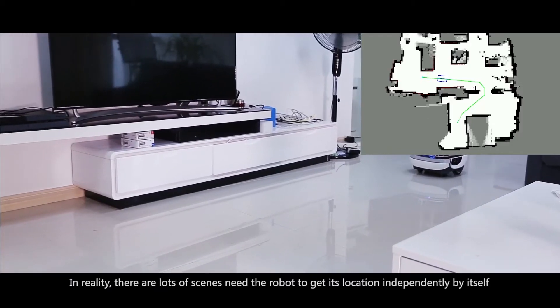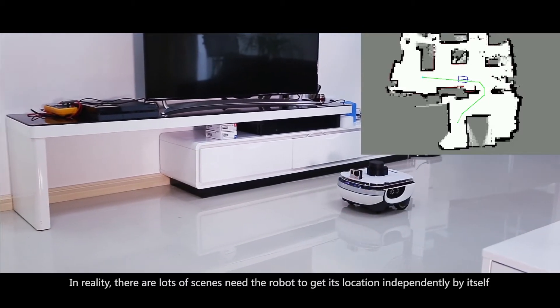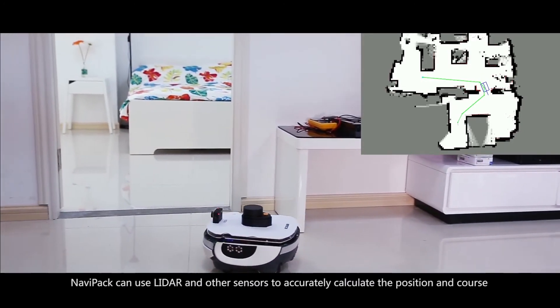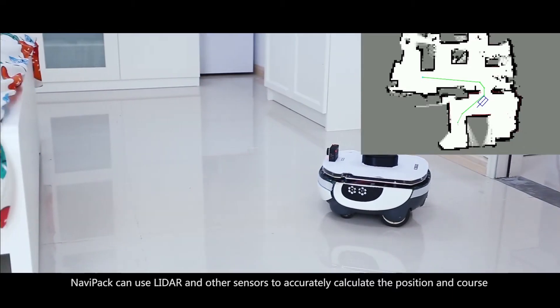In reality, there are lots of scenes where the robot needs to get its location independently. NaviPack can use LiDAR and other sensors to accurately calculate the position and course.